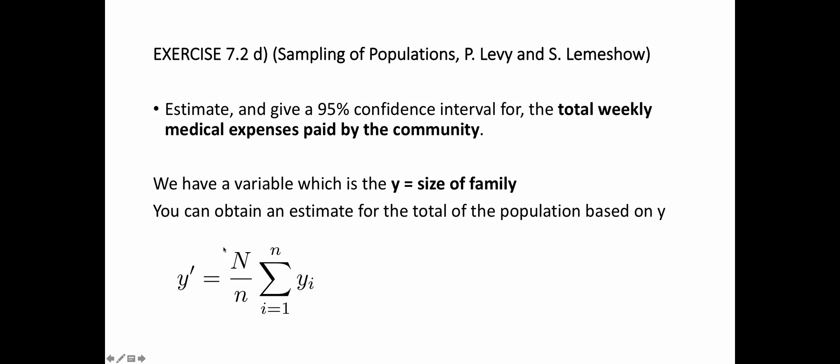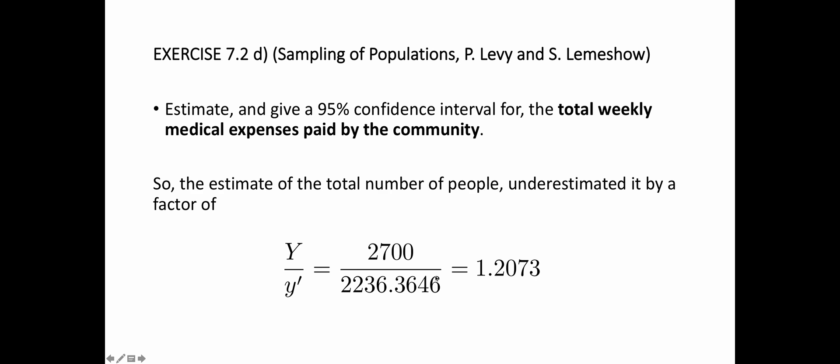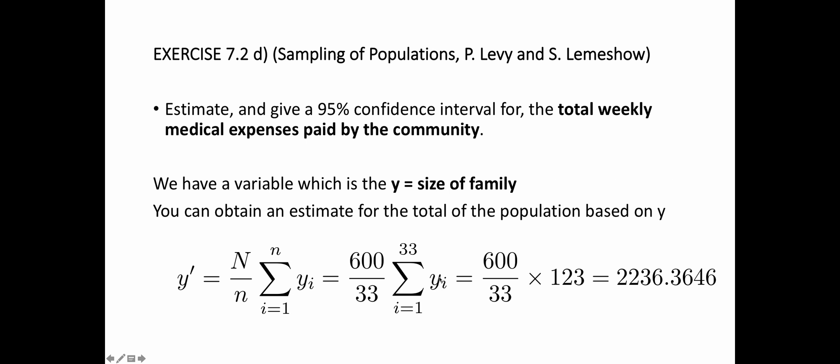Let's do it anyways. I'm going to use the usual estimator for the total of the family size. My capital N is 600 families, I've sampled 33, and the little y is going to be the size of each family. If I do this calculation, I have obtained 2,236.